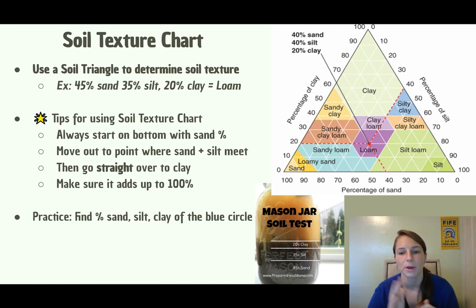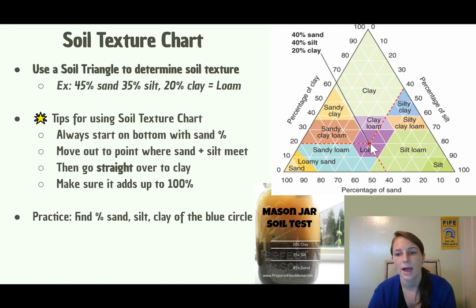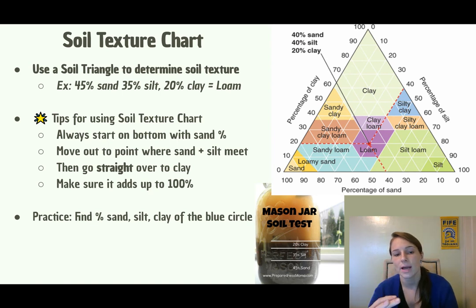Let me walk you through how to actually use a soil texture chart. You always start at the bottom with the percentage of sand and move up diagonally along the triangle. Then, for silt, you go diagonally to that percentage — say 40. Where the sand and silt lines meet, you go straight over to the clay reading. A key tip: make sure all three percentages add up to 100%. If they don't, you did it incorrectly.